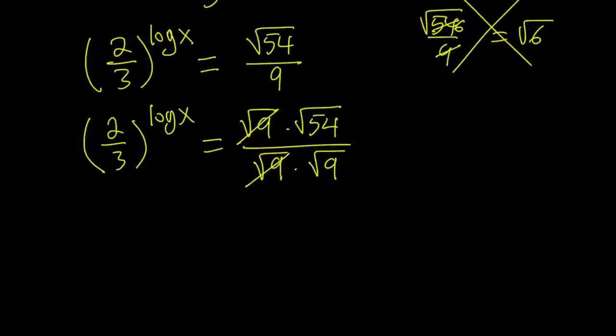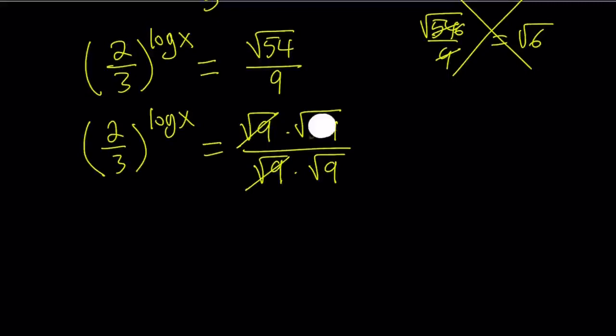Now we can go ahead and cancel out square root of 9 here and our expression is going to be a little simpler. I was supposed to write 6 here, not 54. So now we got square root of 6 divided by square root of 9. And definitely we can write this as the square root of 6 over 9, which can be simplified to square root of 2 thirds.